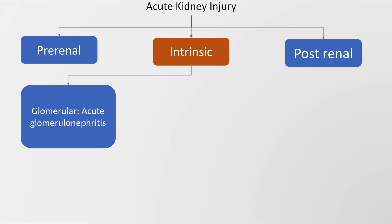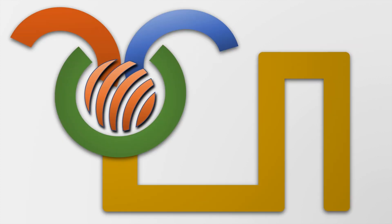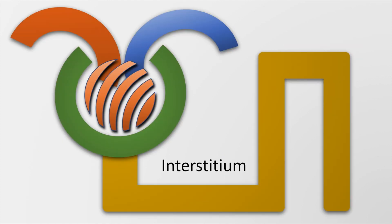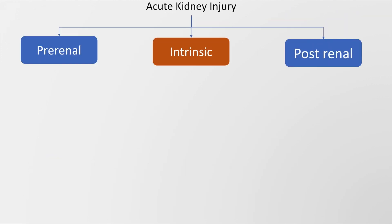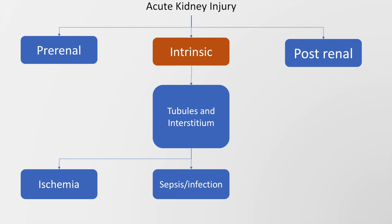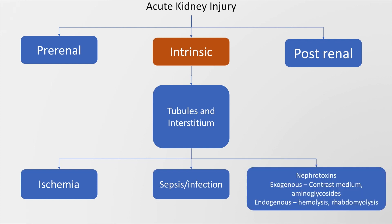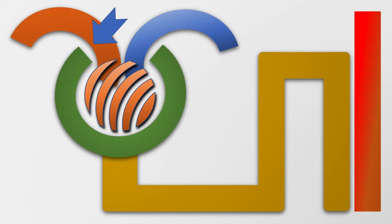Intrinsic acute kidney injury may be due to a pathology in the glomerulus, in which case it is because of acute glomerulonephritis. Intrinsic AKI may also be because of pathology in the tubules or in the interstitium. In this case, it may be due to ischemia, sepsis and infection, and nephrotoxins, which may be exogenous or endogenous, such as contrast medium, aminoglycosides, hemolysis, and rhabdomyolysis.